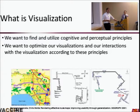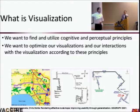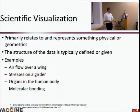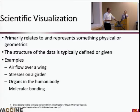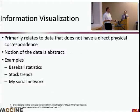We've looked at how to utilize hand-drawn representations — can we use mental models of how people give directions to create more effective route maps? Scientific visualization primarily relates to and represents something physical or geometrical, where the structure of the data is typically defined or given — a 3D grid, airflow over a wing, stresses on a girder, organs in the human body.